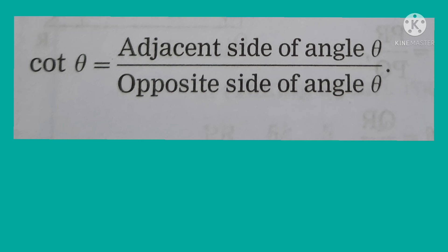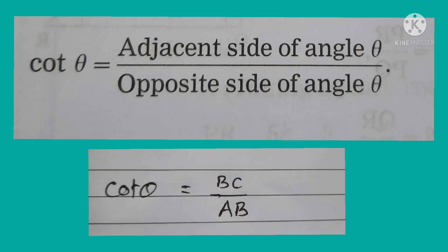Lastly, cotangent theta is written using the adjacent side and opposite side of angle theta of triangle ABC. Cotangent theta is equal to adjacent side upon opposite side of angle theta. Symbolically, cot theta equals BC upon AB.